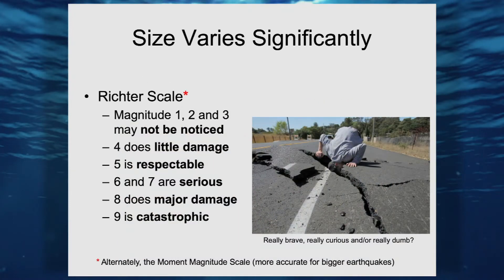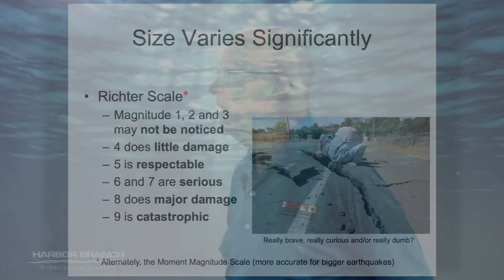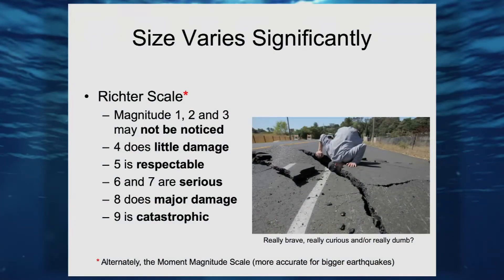Earthquakes can vary widely in magnitude — in the amount of energy involved. When quantifying how powerful an earthquake is, we commonly use the Richter scale, which is a measure of how much energy is released when the earthquake occurs. There are nine categories — nine magnitudes. Magnitudes one, two, and three can be picked up by a seismograph but we would probably not notice them. When we get up into magnitude four, there can be some damage. Five affects a lot of buildings. Six and seven are serious — these make it onto the evening news. Eight does major damage.